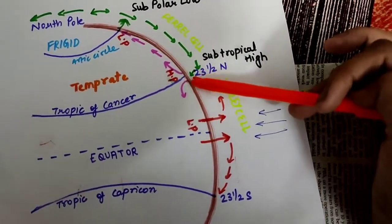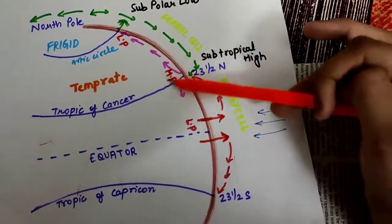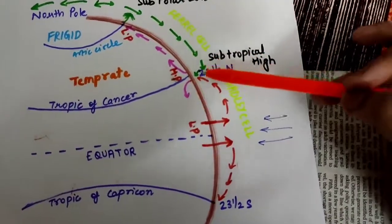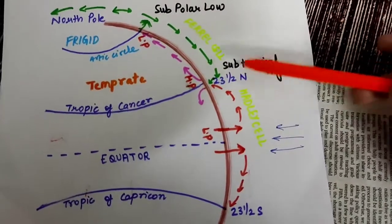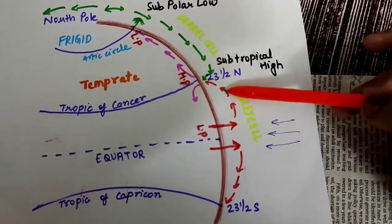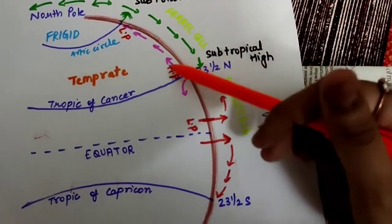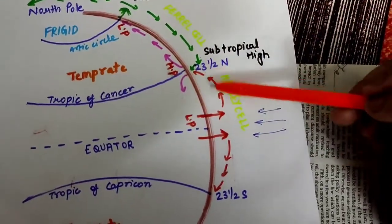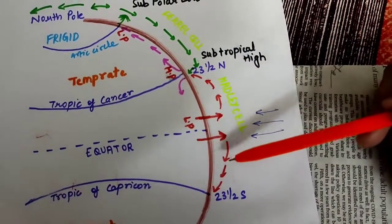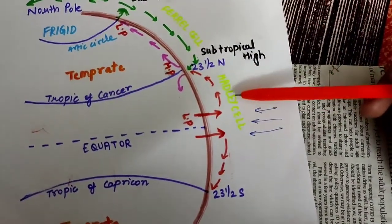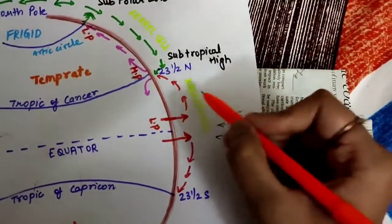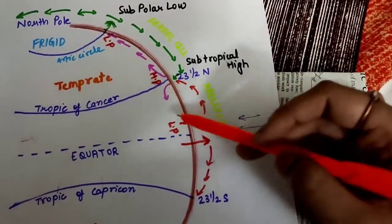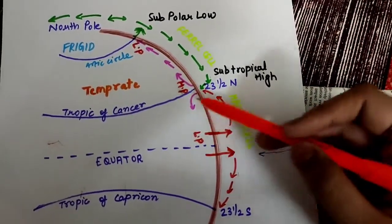I represented this with a different color, the reason being that it is neither hot nor cold—it is like a mixture. It is not that hot because of the convergence, hence I have represented it with a different color. This particular loop created here is Hadley cell—H-A-D-L-E-Y. This particular loop is called as Hadley cell.